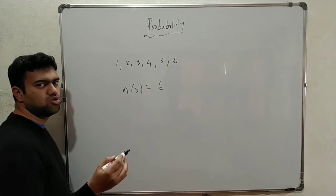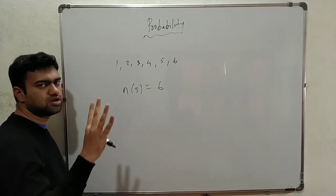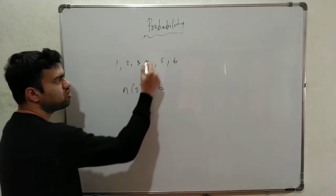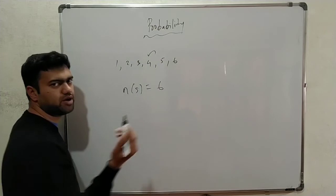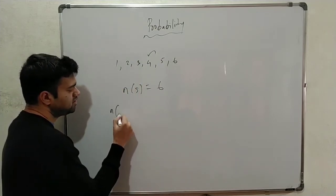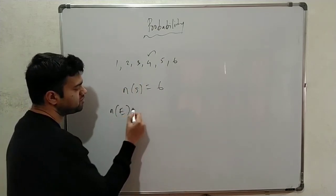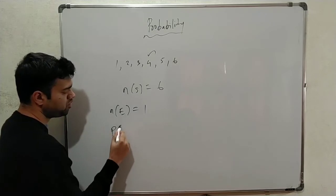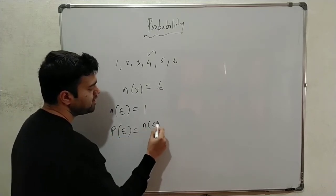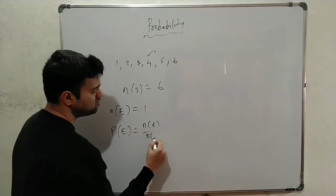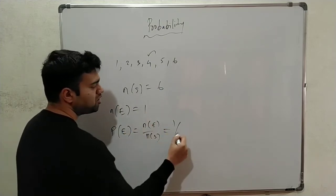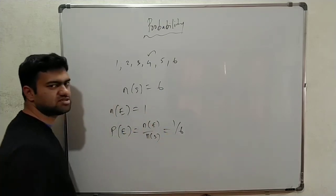We have a condition: the number 4 will appear. So 4 will be available — the event is getting the number 4. The probability of the event is n(E) by n(S). Using the formula you can derive it: 1 out of 6 chances.